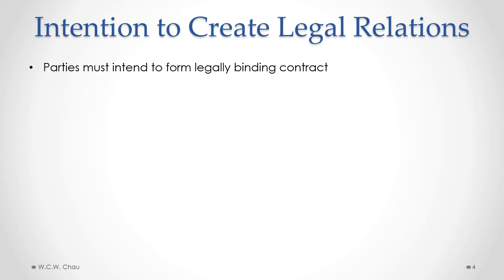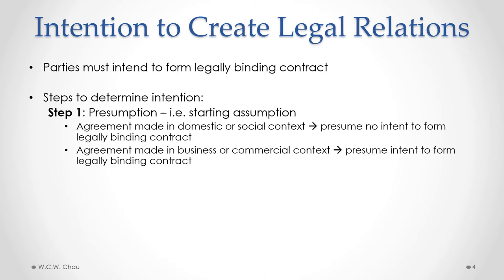So how do we go about ascertaining whether or not someone actually intended to form a legally binding contract? What the courts have done is they've developed a two-step process to determine intention. The first step is to start with a presumption — a starting assumption — and that presumption depends on the type of situation in which the agreement was made. If the agreement was made in a domestic or social context, we presume there was no intent to form a legally binding contract. If the agreement was made in a business or commercial context, we presume the opposite — that there was intent to form a legally binding contract. So step one sets out our starting point.